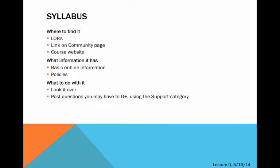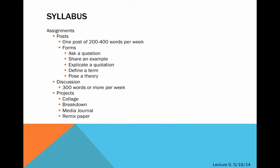Syllabus — where to find it? You can get it on LoRa. There's a link on the community page on Google Plus, and also a link on the course website. You should also find a copy in the Google Drive folder. On the syllabus, you'll find basic outline information about the course and the course policies. For the most part, everything is going to be conducted on Google Plus, so the syllabus is a good standing document, but the most updated information is going to be on Google Plus. Please look it over, and if you have any questions, please post them to Google Plus using the support category, or you can always email me.